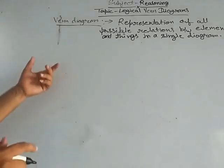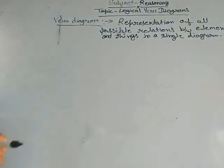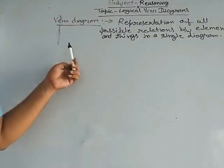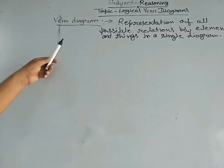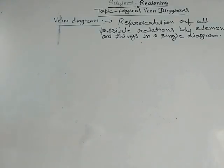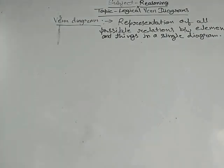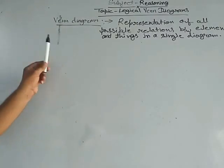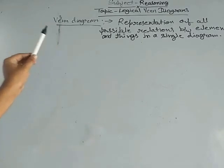It means if the names of two or three elements or things are given to us and we are asked to represent them in a Venn diagram, then in direct language, a Venn diagram is a relationship between things which is represented in a single diagram.